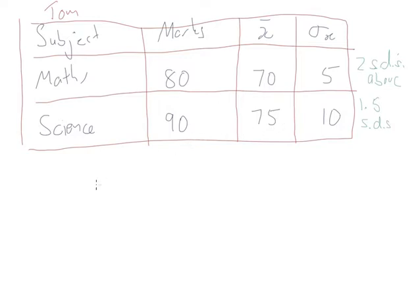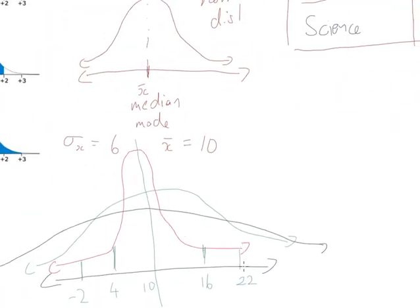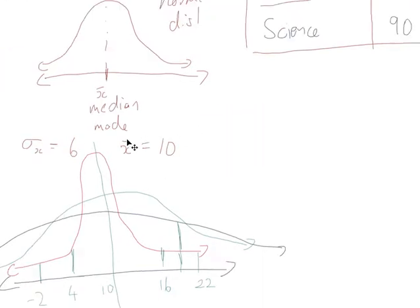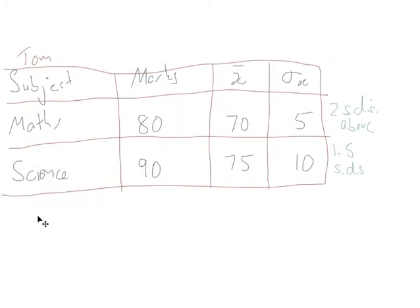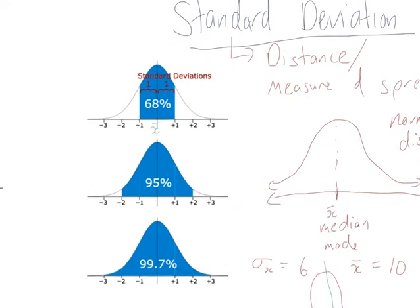The marks in science are more spread. In terms of what's happening graphically, in maths Tom is quite far up the distribution — he's beaten more people, and the area underneath his mark covers most scores. Whereas for science, he came in at 1.5 standard deviations, and the area under that point is actually fewer scores. We know that between minus 2 and plus 2 standard deviations is 95% of scores. If the graph is symmetrical, each side accounts for 47.5%.